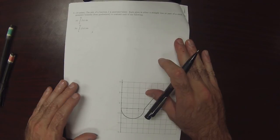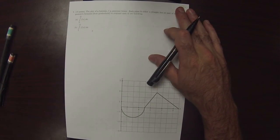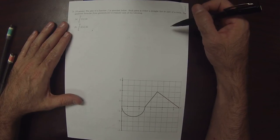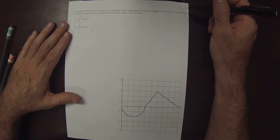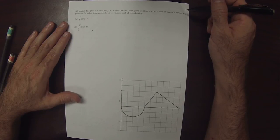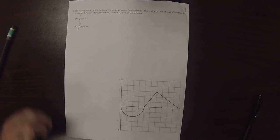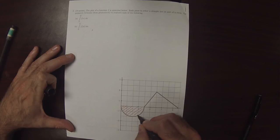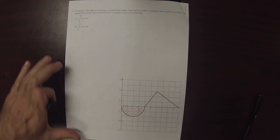The last exercise on this quiz. So, a function is plotted below. Each piece is either a straight line or part of a circle. So, then there's two shapes. There's this semicircle, and there is this triangle.